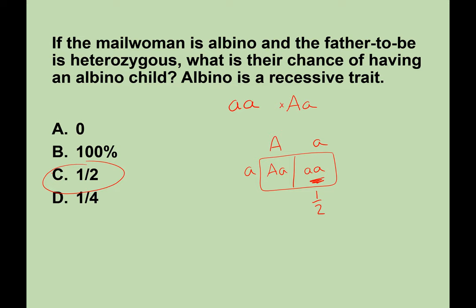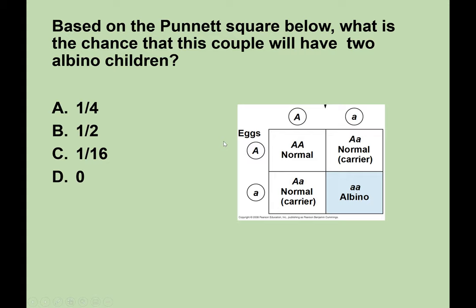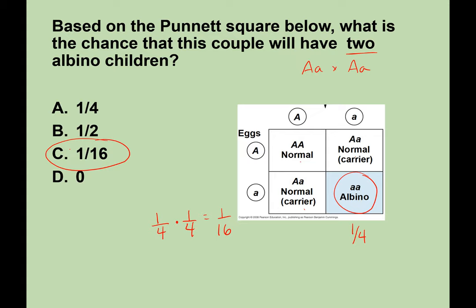Next, using the same Punnett square from a monohybrid cross (Aa × Aa): what is the chance this couple will have two albino children? The chance of one albino child is one out of four. Since we want two children both being albino, that's two events happening simultaneously, so we use the product rule: ¼ × ¼ = 1/16. Notice the probability of two events happening is lower than one event, which is why we use the product rule.